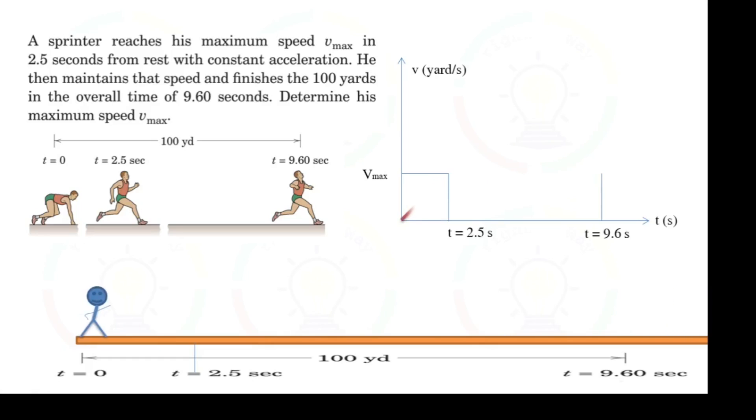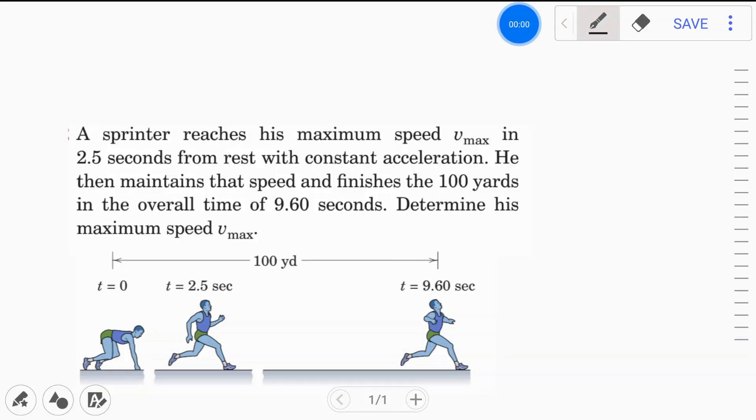This is the given parameter and the required parameter is v_max. To calculate this maximum velocity, first let's try to understand the equation. From time zero to time 2.5, he has a constant acceleration. Then he maintains his speed after that time. That means when he maintains that speed, the acceleration will become zero because there won't be any velocity change.